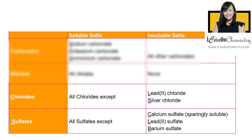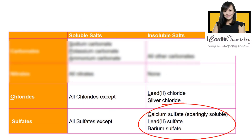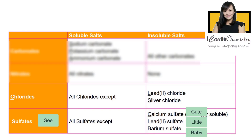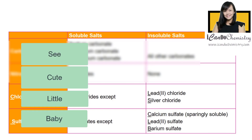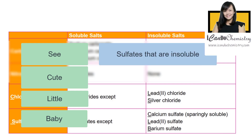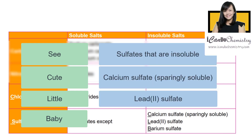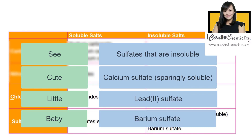What about sulfates? All sulfate salts are soluble except the following three: calcium sulfate, lead-2 sulfate, and barium sulfate. An easy way to remember is the mnemonic CLB — calcium, lead-2, barium. So the sulfate salts that are insoluble are calcium sulfate, lead-2 sulfate, and barium sulfate.